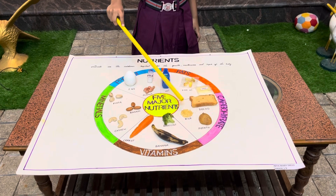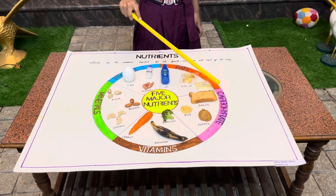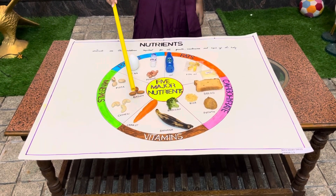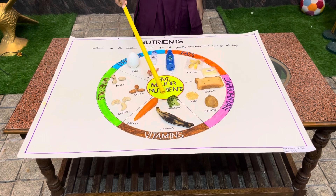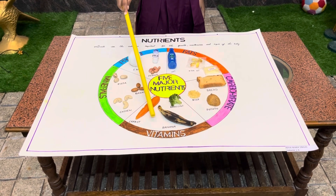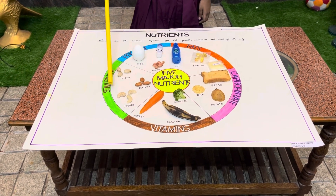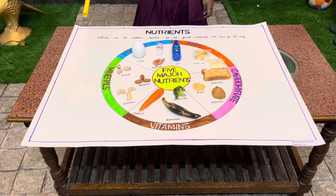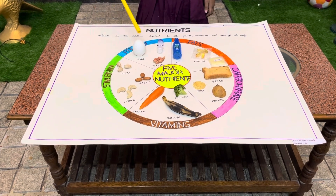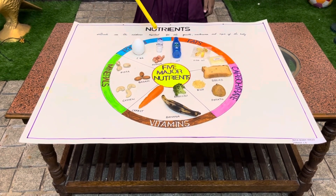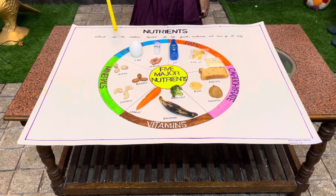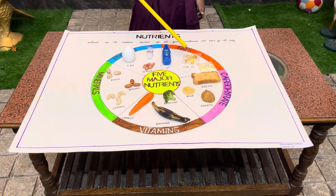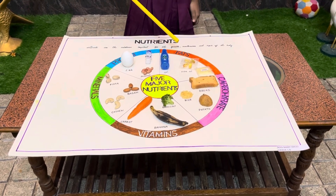Bread and rice contain carbohydrates. Carrot and banana contain vitamins. Cashew and pista contain minerals. Egg and milk contain protein. Oil and fish oil contain fats.